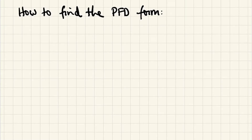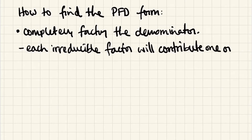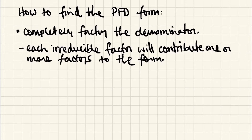Let's talk about how to find the partial fraction decomposition form, because it's not always as straightforward as the previous examples. The first move is to completely factor the denominator. Once done, each irreducible factor contributes one or more terms to the form, depending on two things: the degree of the factor and the multiplicity of the factor.